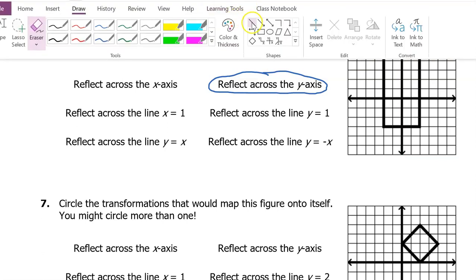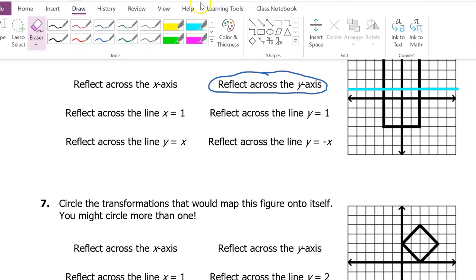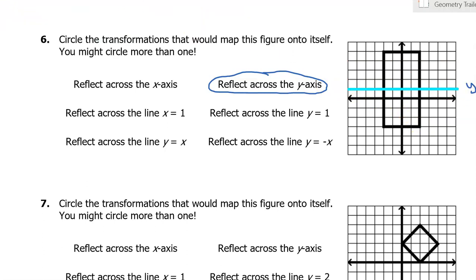Is there a horizontal reflection line? It seems to be here. If I draw that line, I see four units above and four units below. Horizontal lines like this one are always of the form Y equals something, so this is Y equals one. So if we reflect across the line Y equals one, that will map the rectangle onto itself.